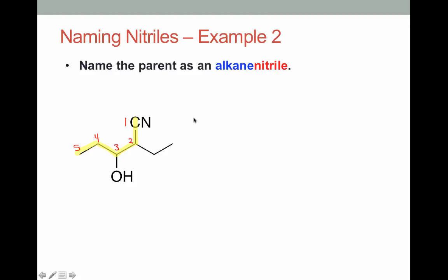We'll name this parent as an alkanenitrile. 5 carbons is pentane. So we'll name this as pentanenitrile. Next step, we'll number and identify any substituents. And now we do have a couple of substituents. On carbon 2 we have an ethyl group. And on carbon 3 we have a hydroxy group.